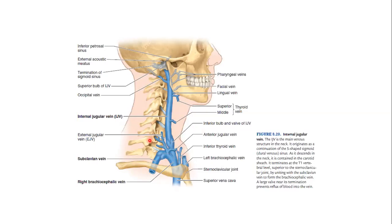These are the seven cervical vertebrae with the vertebra prominens. This is C7 and this is the T1 vertebra. The termination of the internal jugular vein is at the level of the T1 vertebra. This is the landmark — and this all happens here at the sternum and clavicle, specifically at the sternoclavicular joint. At the level of T1 the internal jugular vein terminates by uniting with the subclavian vein to form the brachiocephalic vein.